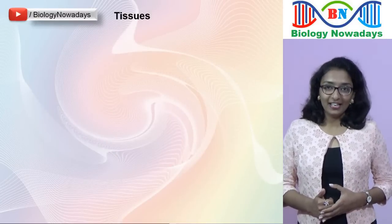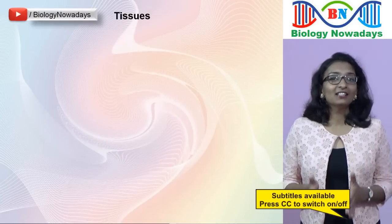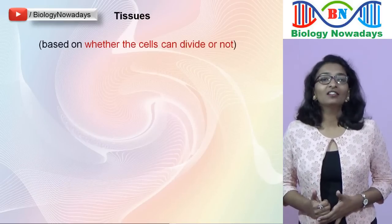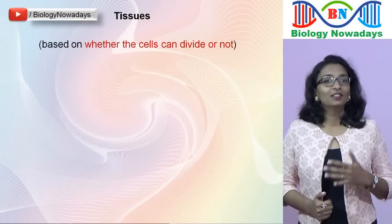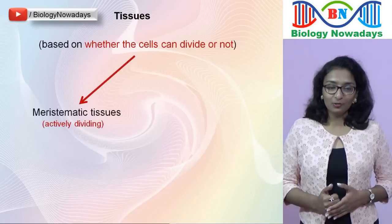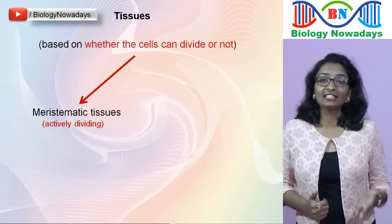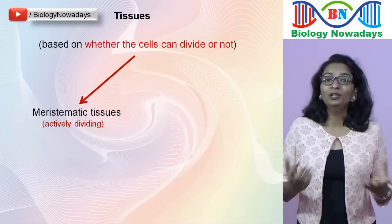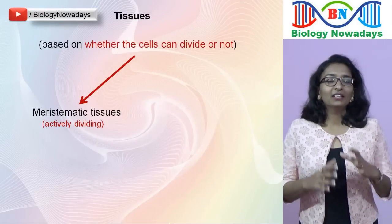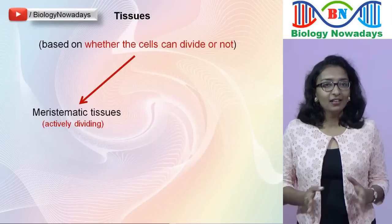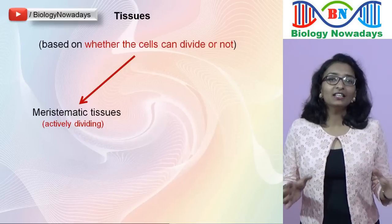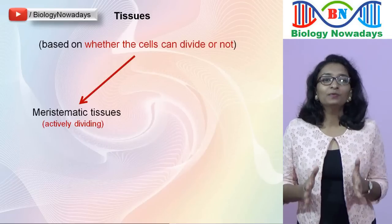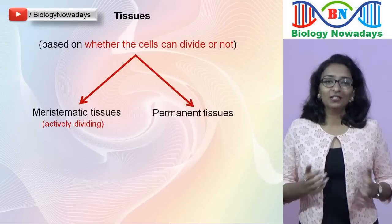In the previous lecture, we learnt that based on whether the cells in the tissues are capable of dividing or not, tissues are classified into two main groups. The first one is the meristematic tissues which consist of young, actively dividing cells. They divide and re-divide continuously and form new cells. But as cell division proceeds, some of the older cells lose their capacity for cell division and get matured. These groups of cells form the permanent tissues.